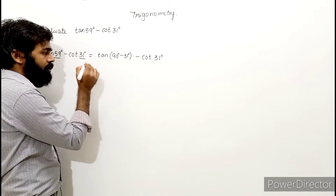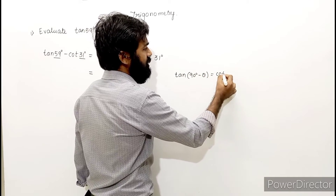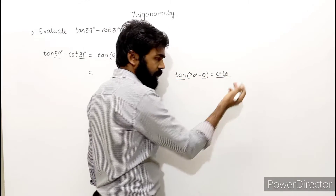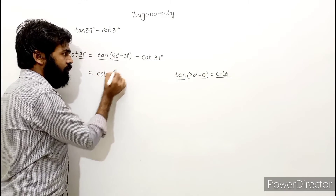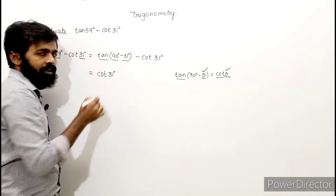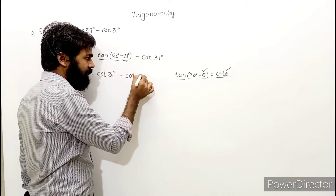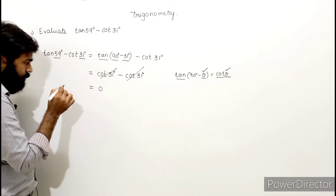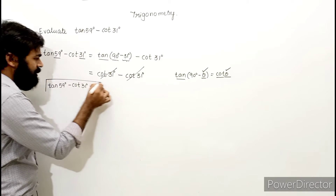We know that tan(90 minus θ) equals cot θ — a relation derived in the previous session. So tan(90 minus 31) becomes cot 31 degrees. Now we have cot 31 minus cot 31, which cancels to give 0. Therefore, tan 59 degrees minus cot 31 degrees equals 0.